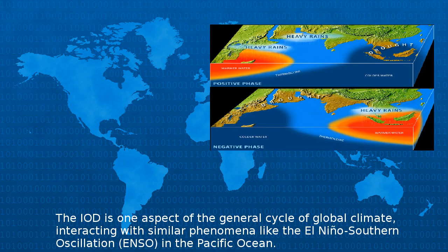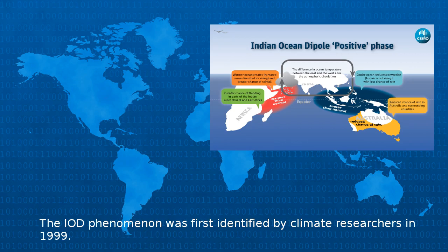The IOD is one aspect of the general cycle of global climate, interacting with similar phenomena like the El Niño–Southern Oscillation in the Pacific Ocean. The IOD phenomenon was first identified by climate researchers in 1999.